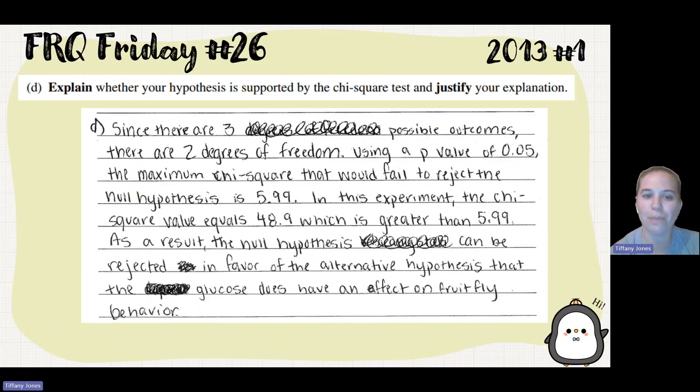So since there are three possible outcomes, there are two degrees of freedom. Using a p-value of 0.05, the maximum chi-square that would fail to reject the null hypothesis is 5.99. In this experiment, the chi-square value equals 48.9, which is greater than 5.99. As a result, the null hypothesis can be rejected in favor of the alternate hypothesis that the glucose does have an effect on the fruit fly behavior.